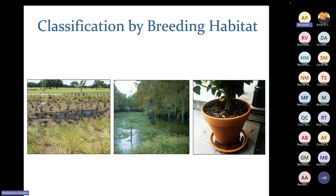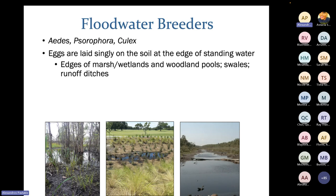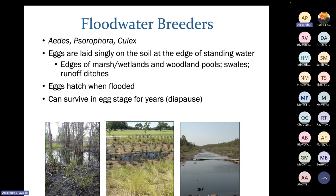When thinking about adult mosquitoes, we can classify them by their preferred breeding habitat. There are three major classes: floodwater, permanent water, and containers. For floodwaters, this includes species in the Aedes, Psorophora, and Culex genera. Eggs are laid on wet soil on the edges of standing water — marsh and wetland edges, woodland pools, swales, or runoff ditches. They go through a drying stage and then emerge when the area floods again. Aedes eggs can resist drying and survive in that egg stage for years.